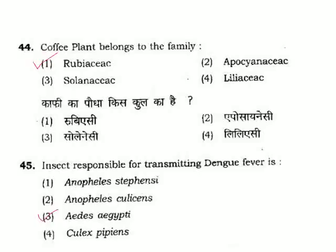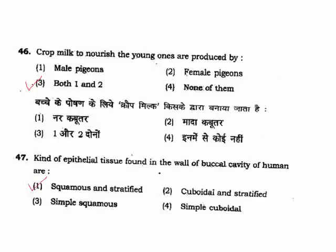Question 45: Insect responsible for transmitting dengue fever is — Aedes aegypti. Option 3. Question 46: Crop milk to nourish young ones is produced by — both male and female pigeons produce crop milk. Correct answer is Option 3.